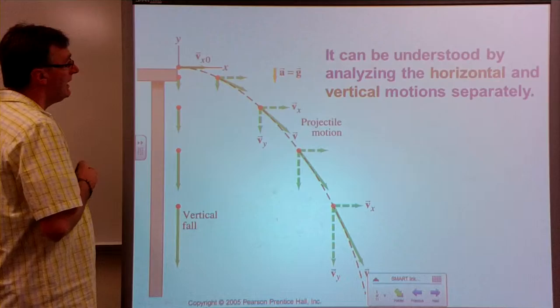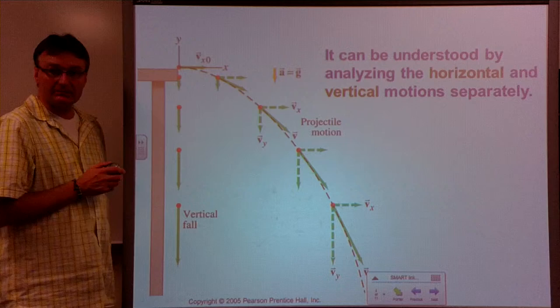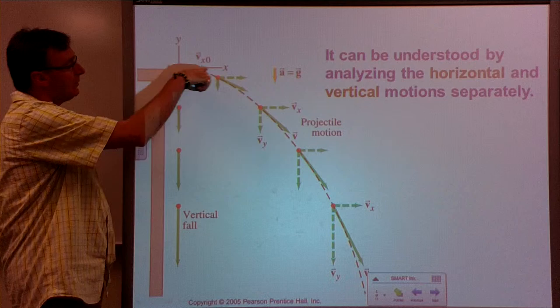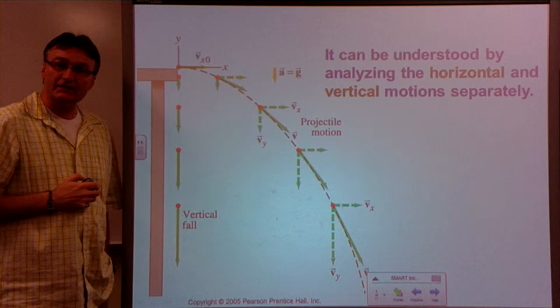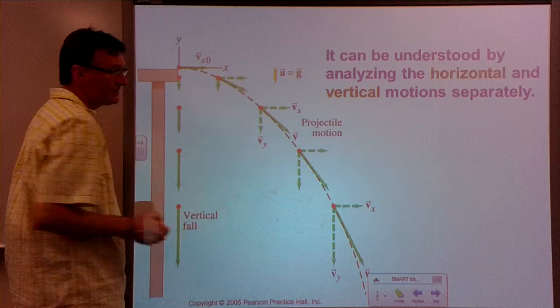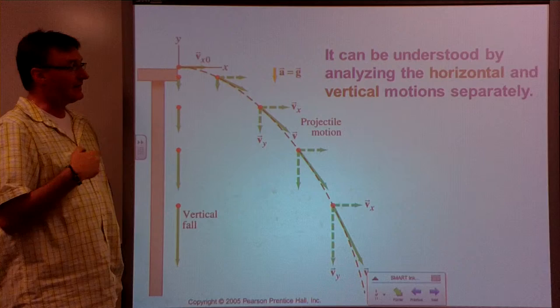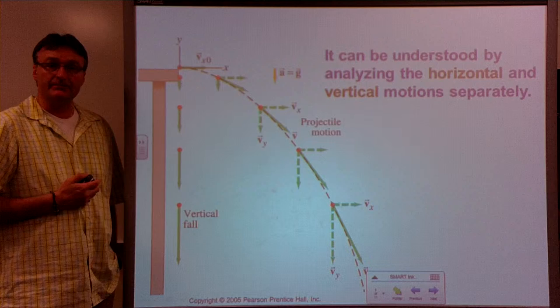In analyzing projectiles, we need to look at the x component and the y component separately. When something is launched and given a velocity component in the x direction, that velocity component will always be the same. There is no acceleration in the x direction — if it has an initial velocity when launched, that velocity remains the same throughout its trajectory.